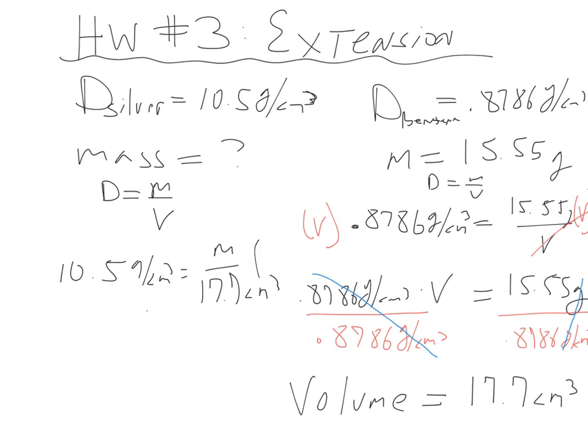So we have to multiply both sides by 17.7 cubic centimeters. Cubic centimeters by cubic centimeters cancel out, leaves us with grams for our mass, which is what we're looking for. 17.7 divided by 17.7 cancels out, leaves us with mass. Pump that into our calculator, and we will get a solution.